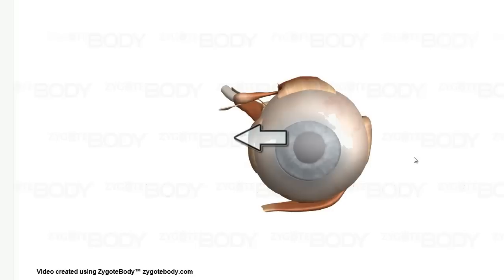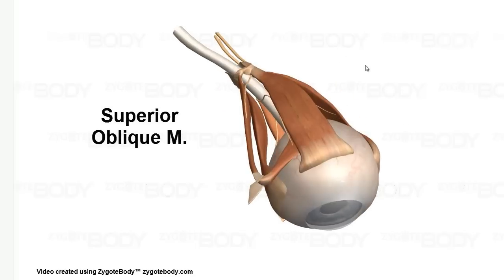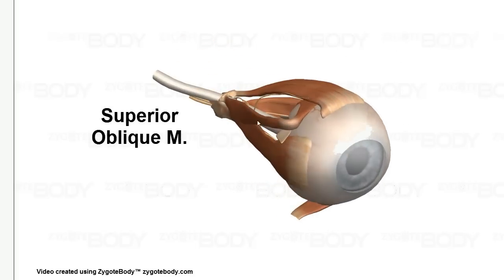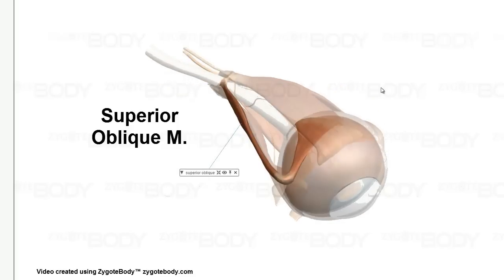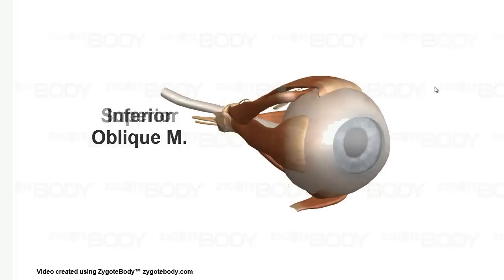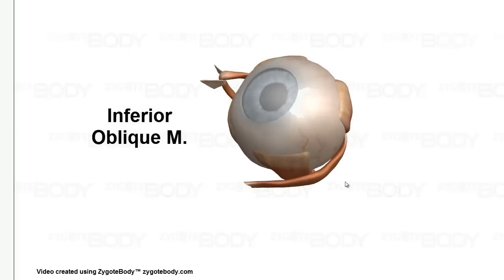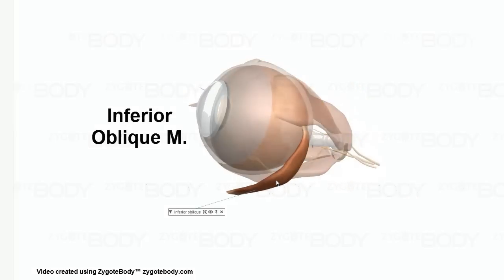But then we have these two oblique muscles. We have the superior oblique muscle at the top. And if we have a superior oblique muscle, well, we must have an inferior oblique muscle as well.